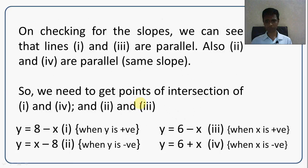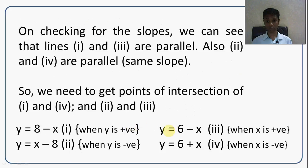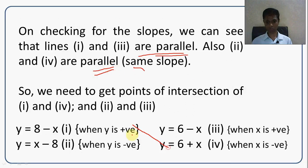When we solve, we realize that equation 1 (y = 8 minus x) and equation 3 (y = 6 minus x) have the same slope — they are parallel and cannot intersect. Similarly, equation 2 (y = x minus 8) and equation 4 (y = x plus 6) also have the same slope and are parallel. So equations 1 and 3 are parallel, and 2 and 4 are parallel. The only possible intersections are between 1 and 4, and between 2 and 3.